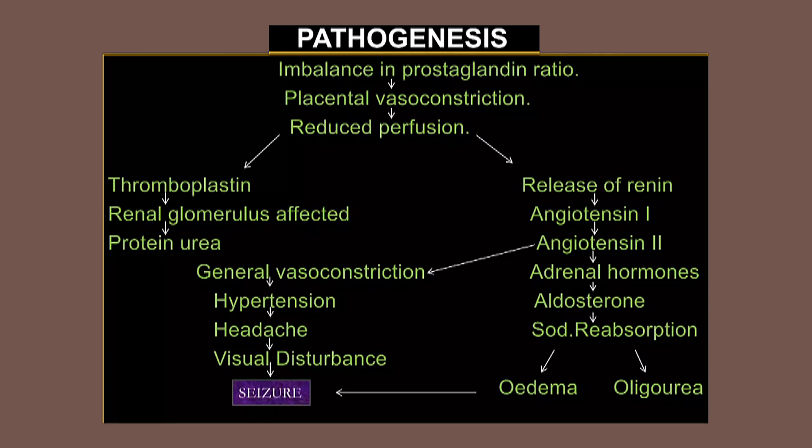Whenever there is reduced placental perfusion, it releases thromboplastin, which affects the renal glomerular filtration rate and finally leads to proteinuria. Additionally, reduced placental perfusion automatically releases renin, which converts angiotensin 1 to angiotensin 2, causing vasoconstriction, which leads to hypertension.